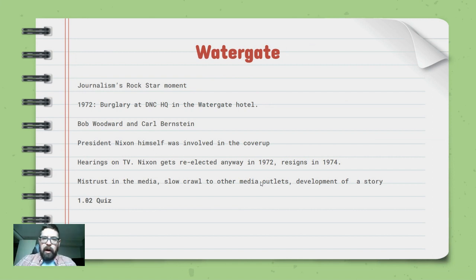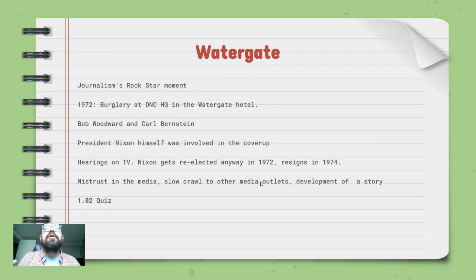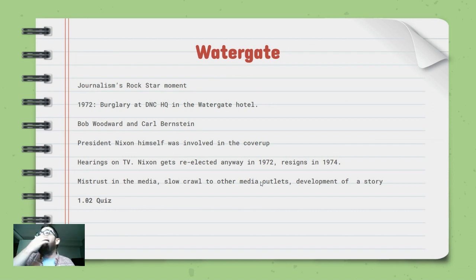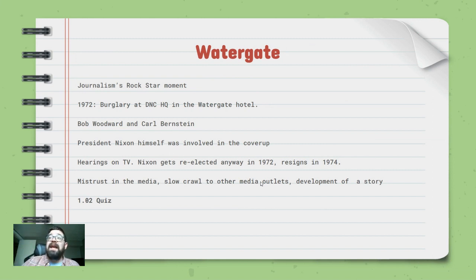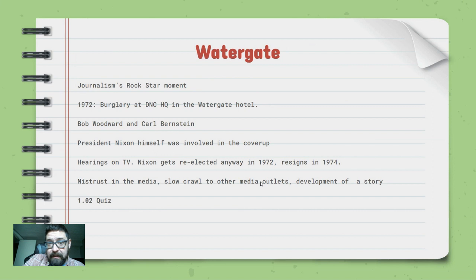Here's the weird part: Nixon was polling incredibly well in that election — he was going to win — and yet they still felt they needed to do this. The burglary goes wrong. Clues and evidence are left behind, they don't even find what they were looking for. Two Washington DC beat reporters from the Washington Post — Bob Woodward and Carl Bernstein — start looking into the case and keep digging. They eventually find that it was a group of Nixon supporters from the Committee to Re-Elect the President — which unfortunately acronyms out to CREEP.